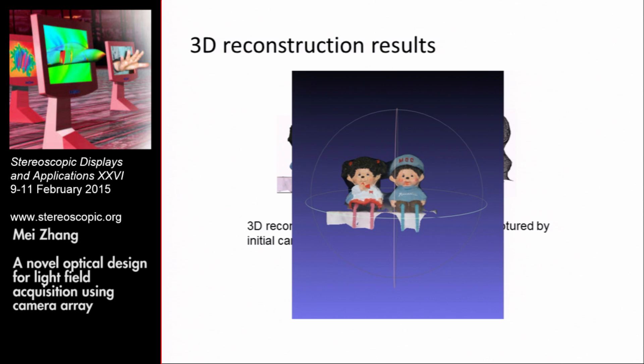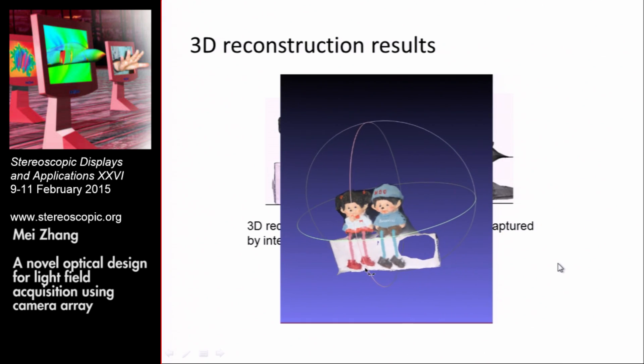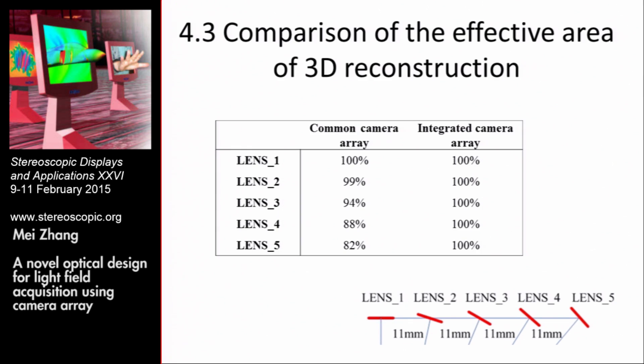There is a video so we can see it clearly. Finally, we make a comparison of the effective area of 3D reconstruction for the common camera array and the integrated camera array. For the common camera array, from lens one to lens five, the effective area becomes smaller and smaller. But for the integrated camera array, the effective area is 100% for all cameras.